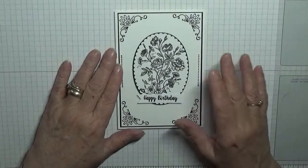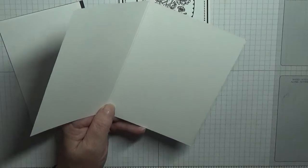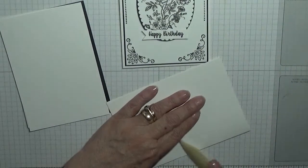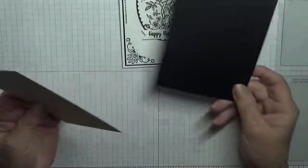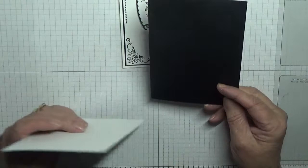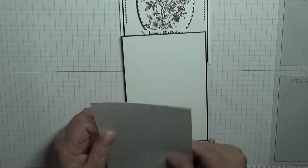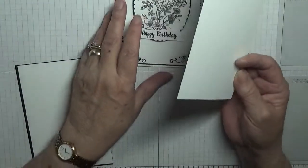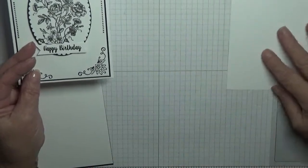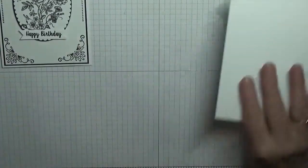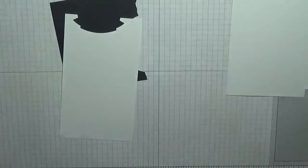I've mounted all the stamps. For the card you need a card base of eight and a quarter by five and seven-eighths, scored at four and one-eighth, folded in half and burnished. A piece of black cardstock at five and five-eighths by three and seven-eighths. A piece of white cardstock at five and a half by three and three-quarters, and a piece of white for the inside at five and five-eighths by three and seven-eighths. So we'll start off. You need some scrap black and white for the sentiment and the scallops.